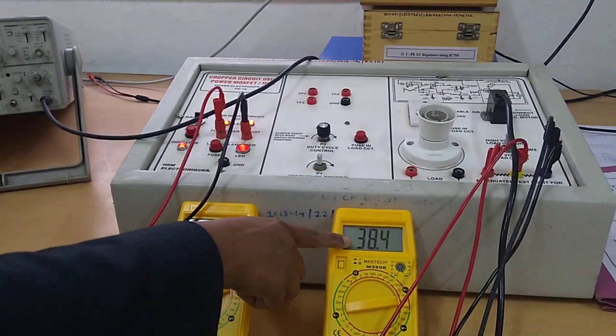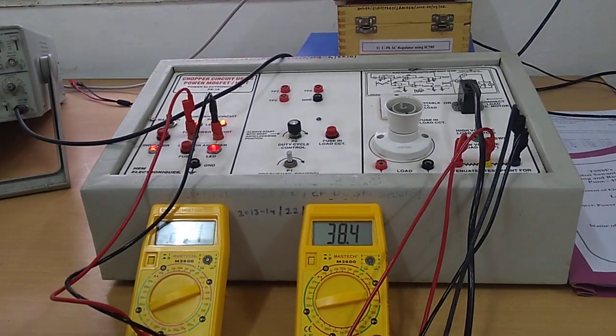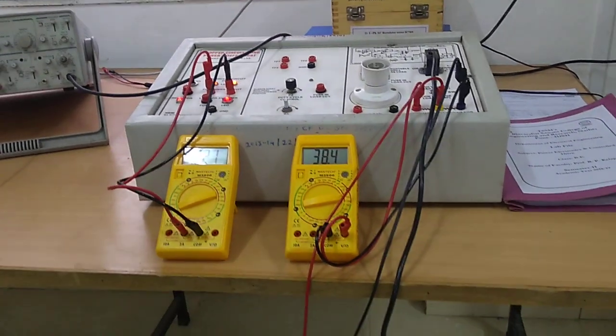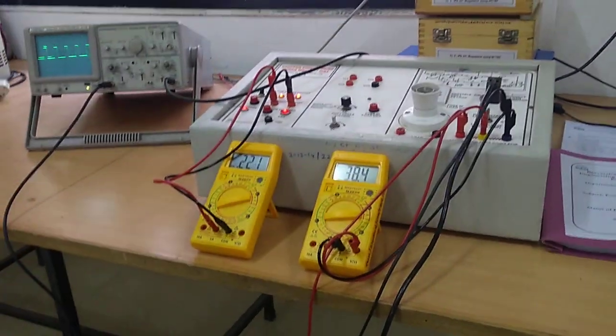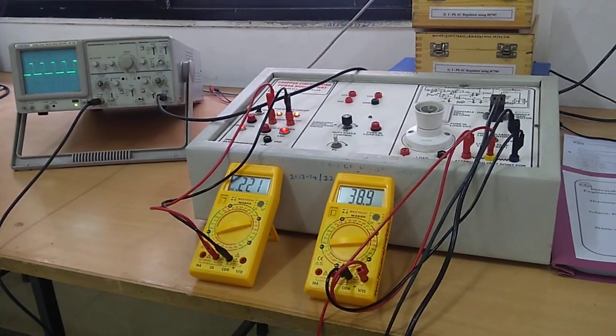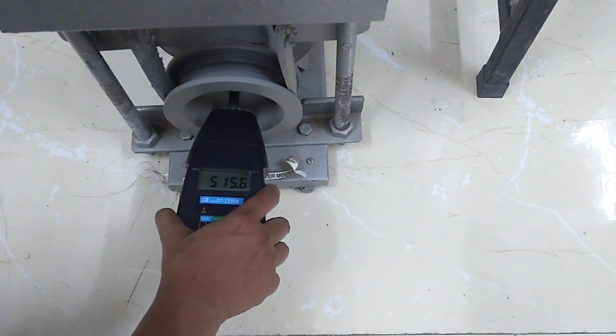Now we will measure the speed of the DC motor. Here we can observe the voltage which is applied to the armature of the DC motor: 38.4 volts. If we measure the speed of the motor, it is right now 515 RPM.